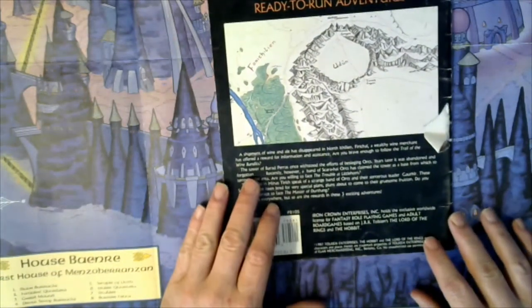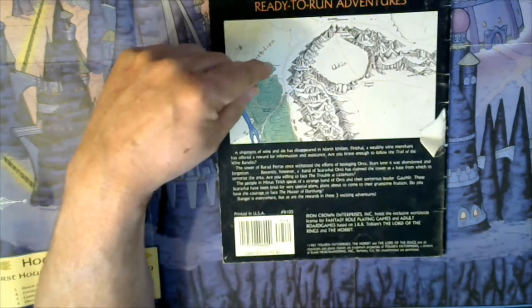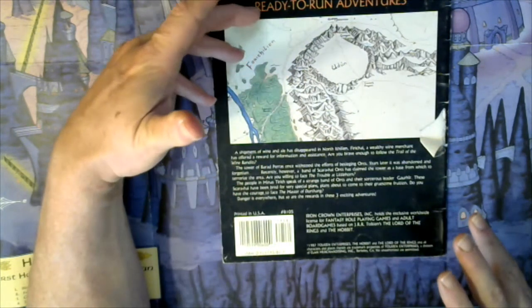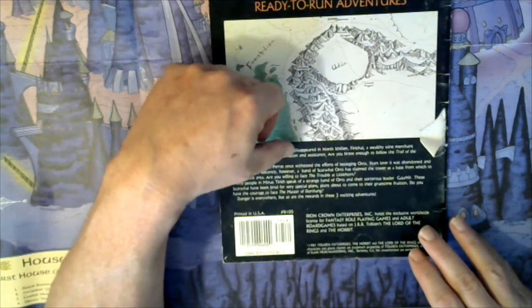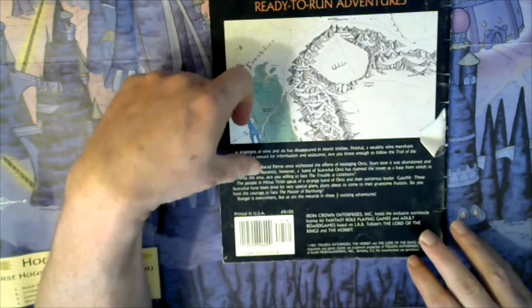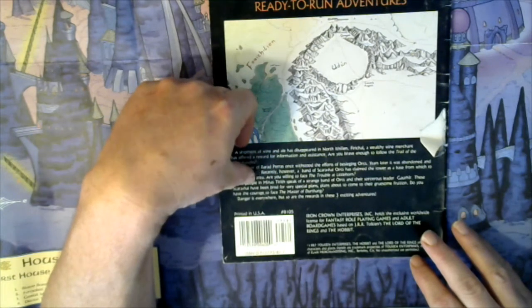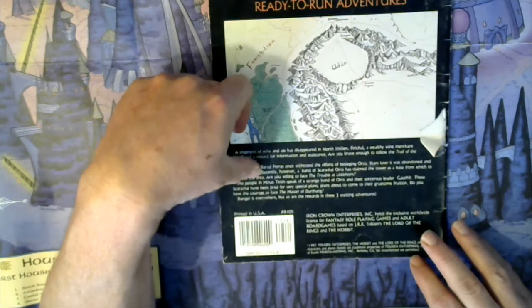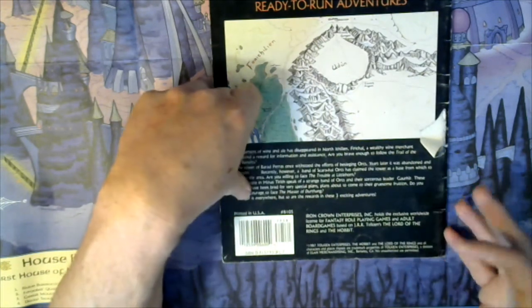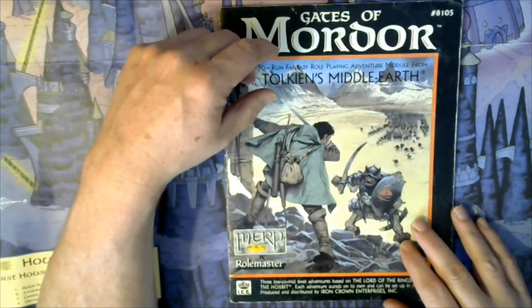What we have here is an area in and around the gates of the Maranon and the Northern Ithilian. A shipment of wine and ale has disappeared in North Ithilian. A wealthy wine merchant has offered a reward for information and assistance. Are you brave enough to follow the trail of the wine bandits? The tower of Barad Paras once withstood the efforts of besieging orcs. Years later it was abandoned and forgotten. Recently, however, a band of Scarahai orcs have claimed the tower as a base from which to terrorize the area.